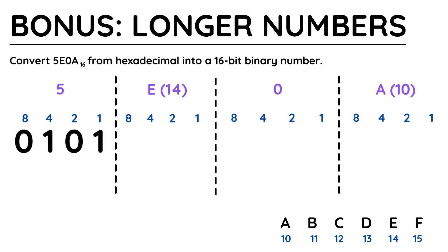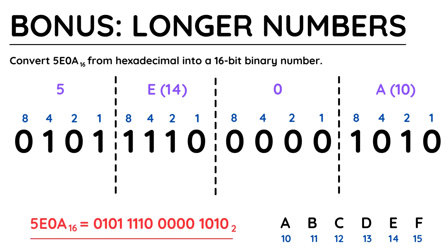5 is just 4 plus 1 for a really simple calculation. Next is E, which is equivalent to 14, which is 8 plus 4 plus 2. If it's 0, don't leave it blank. You need to put a 0 for each of the 4 bits. And finally, A, which is 10, which is 8 plus 2.